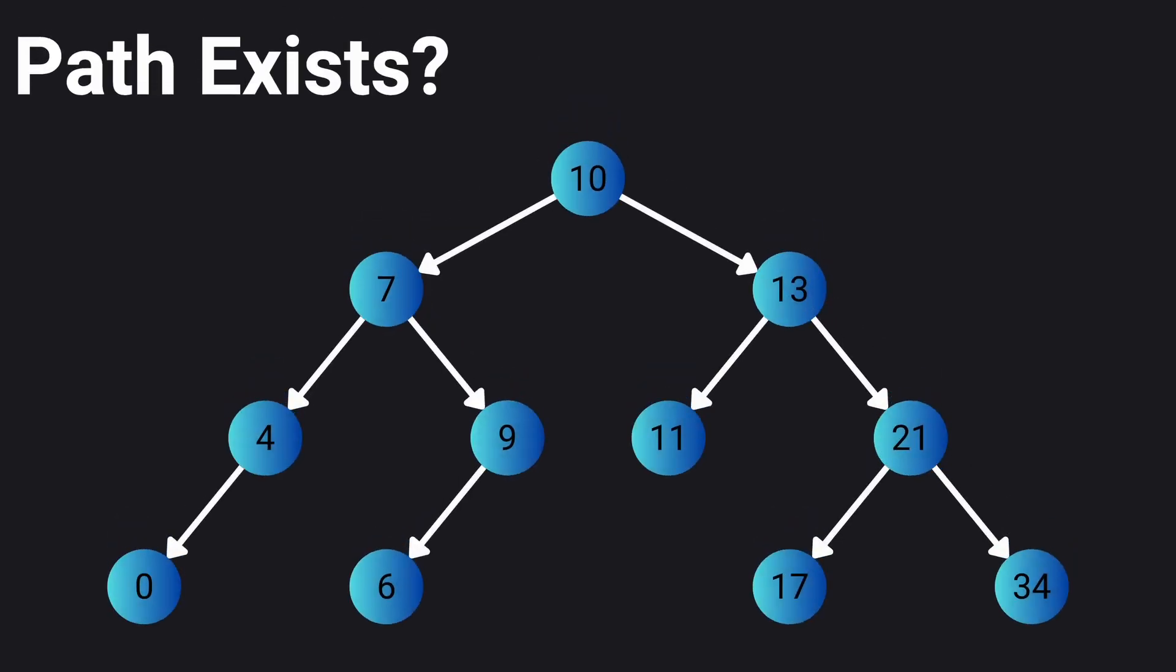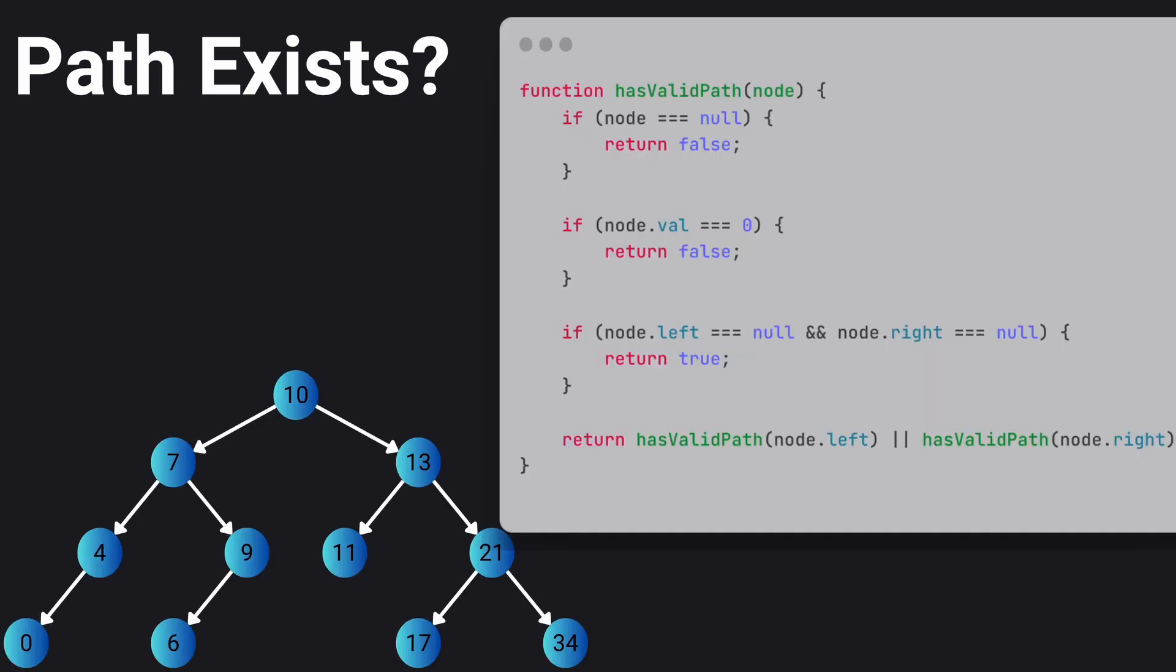The simplest example of backtracking is to determine whether there is a path from the root to a leaf in a binary tree without encountering any zeros. If there is a path, we return true, otherwise we return false. So we need to start searching from the root of our tree.